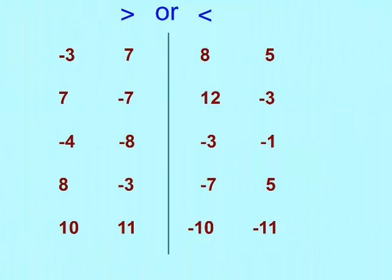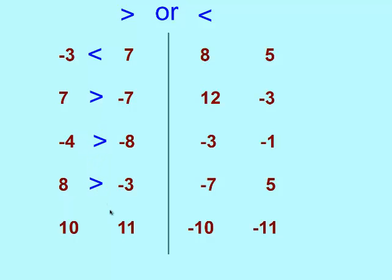You may need a number line to help with this. I'm going to put the greater than or less than sign between these two numbers to compare them. Negative 3 and positive 7 — negative 3 is smaller than positive 7. Positive 7 and negative 7 — a positive number is larger than a negative number. Negative 4 and negative 8 — remember, the farthest to the left is the smaller number, so negative 8 is smaller than negative 4, meaning negative 4 is greater than negative 8. Then a positive and a negative — easy, the positive is bigger. And for two positive numbers: 11 is bigger than 10, so 10 is less than 11.